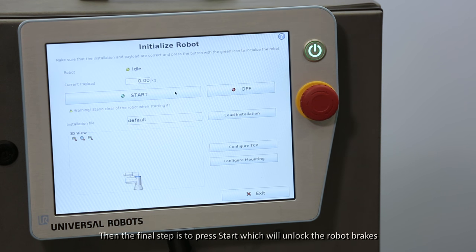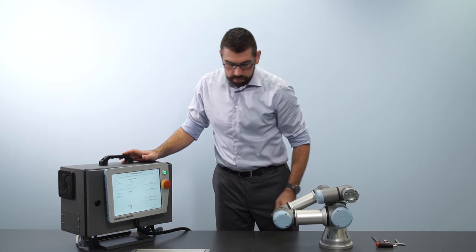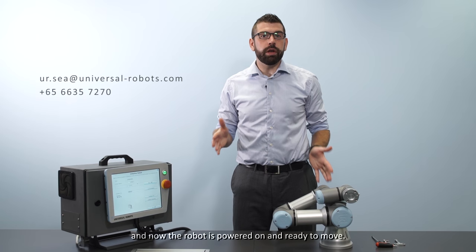Then the final step is to press start, which will unlock the robot brakes. And now the robot is powered on and ready to move.